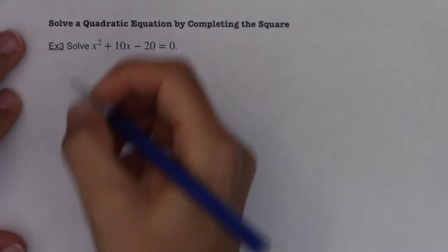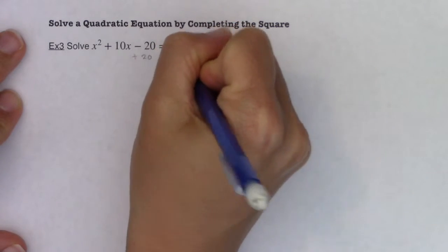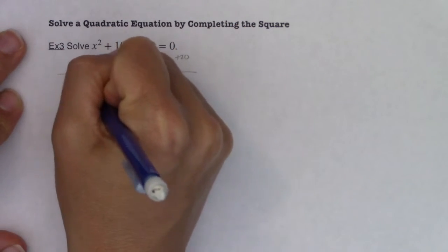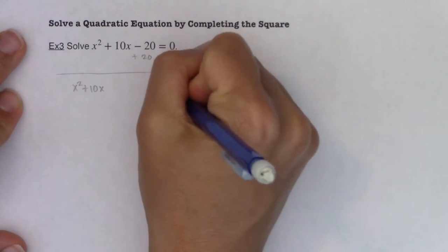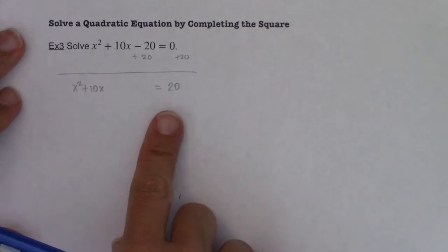So this is how this goes. I'm going to add the 20 over here. And I'm going to leave some space. And I'll show you what I mean by leave some space. So I'll have x squared plus 10x on the left, and I will have 20 on the right.